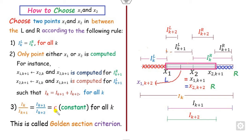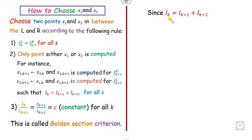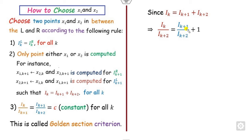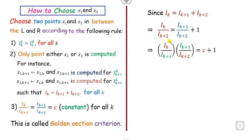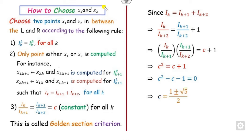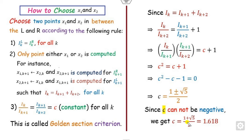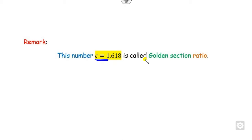The third criterion is that the ratio i_k divided by i_{k+1} is a constant c, called the golden section ratio. Since i_k equals i_{k+1} plus something, dividing both sides by i_{k+1} gives c. Multiplying and dividing with i_{k+1} gives c² = c + 1. Solving this, since length cannot be negative, c equals 1.618, which is the golden ratio.